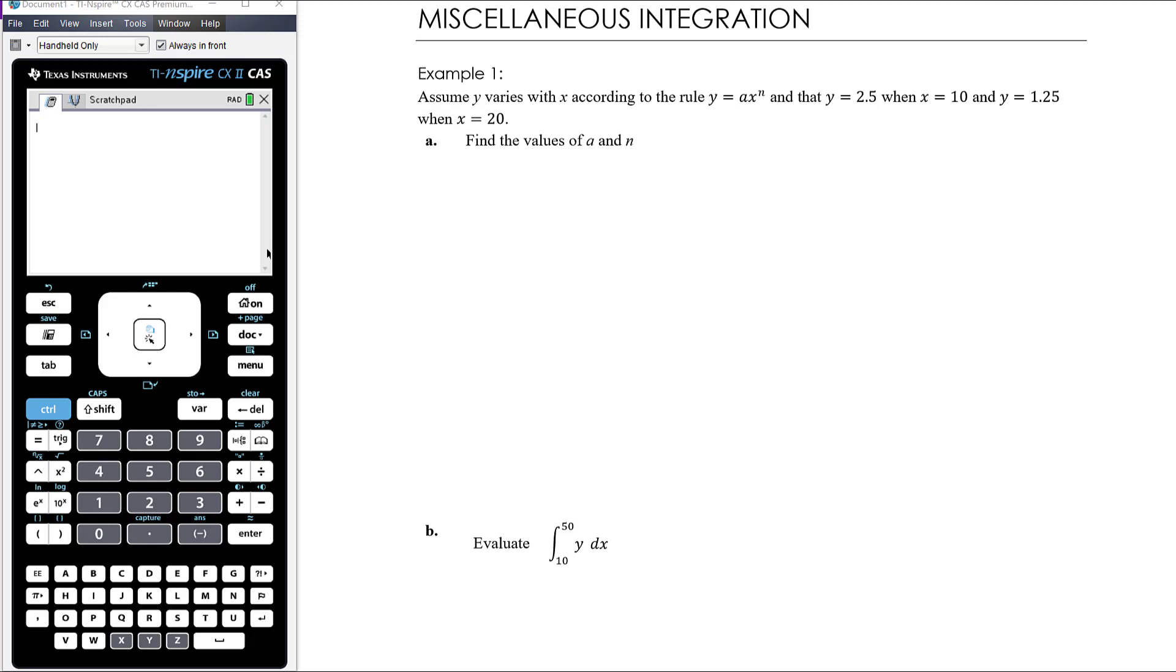We've essentially been given two points on the equation. We've got two unknowns so we can find a and n that way. Obviously if we've got our CAS it's a pretty easy substitution and solve the simultaneous equations if we set it up right, but I think the numbers here should enable us to do it by hand reasonably easily.